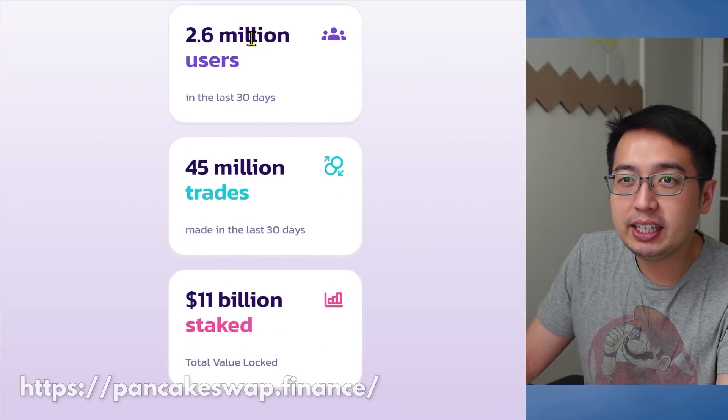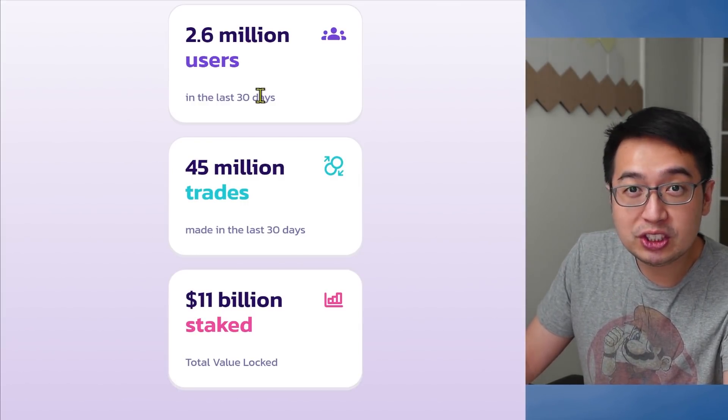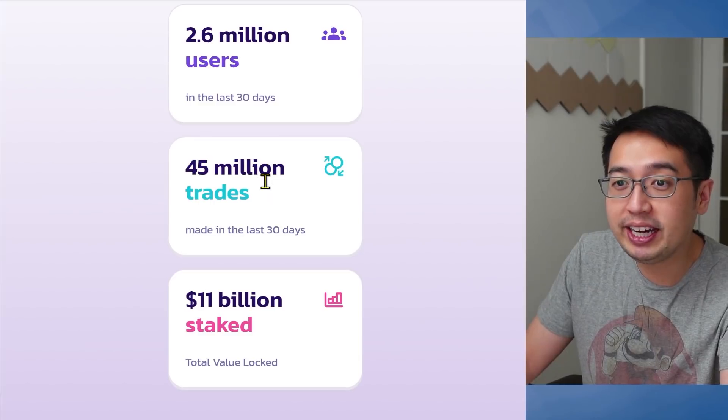Taking a look at their website, PancakeSwap.finance, they have 2.6 million users in the last 30 days, 45 million trades, and about $11 billion staked. The best way to find out if you can trust a service is by looking at how much value is locked on their platform. Can you trust PancakeSwap? Yes, to an extent. Definitely minimize your risk by using a wallet exclusively for PancakeSwap. You can create multiple wallets within TrustWallet or MetaMask for free. PancakeSwap hasn't been hacked, but there's no telling that might not happen in the future if someone discovers a vulnerability — that's the dangerous part of cryptocurrency.